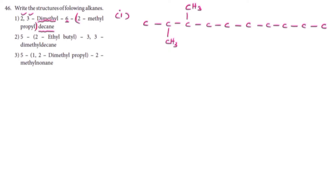First carbon, second carbon, third carbon, fourth carbon, fifth carbon, sixth carbon. In this 6th position, there is a methyl group. We find the methyl group in the 2nd position. Then we find the methyl group again. This is the 3rd carbon group, and the 2nd carbon is the methyl group.